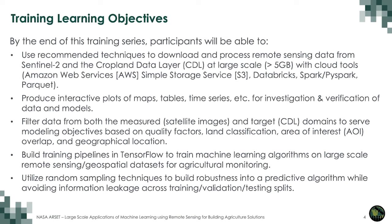By the end of this training series, participants will be able to use recommended techniques to download and process remote sensing data from Sentinel-2 and the cropland data layer at large scale with cloud tools. Participants will produce interactive plots of maps, tables, and time series for investigation and verification of data and models. They will filter data from both the measured and target domains based on quality factors, land classification, area of interest overlap, and geographical location. They will also build training pipelines in TensorFlow to train machine learning algorithms on large-scale remote sensing geospatial data sets for agricultural monitoring, and utilize random sampling techniques to build robustness while avoiding information leakage across training, validation, and testing splits.